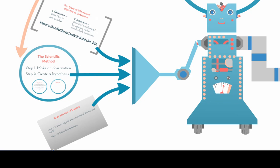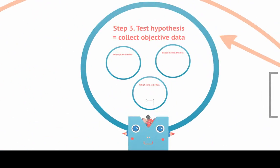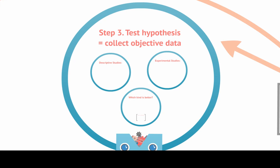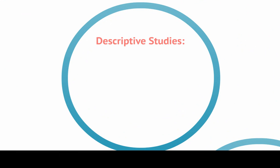So now we're going to take our hypothesis and dump it in and get something out of this. Step three, we're going to test our hypothesis, and specifically we're going to test our hypothesis by collecting objective data. There are two different kinds of studies out there when you look at ways to collect objective data about a particular hypothesis.